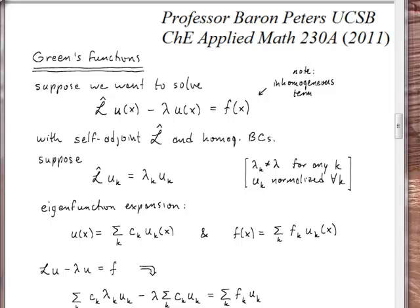Today we're going to talk about Green's functions. These are basically a form of eigenfunction expansion — we do it once and for all so that we obtain an integral operator that does the eigenfunction expansion for us, given any inhomogeneous term. This is useful for solving problems involving a self-adjoint operator with homogeneous boundary conditions. The integral operator has a kernel — the Green's function — that lets us integrate the inhomogeneous term and recover the solution to the partial differential equation. It's quite a neat and powerful framework for many physical problems.